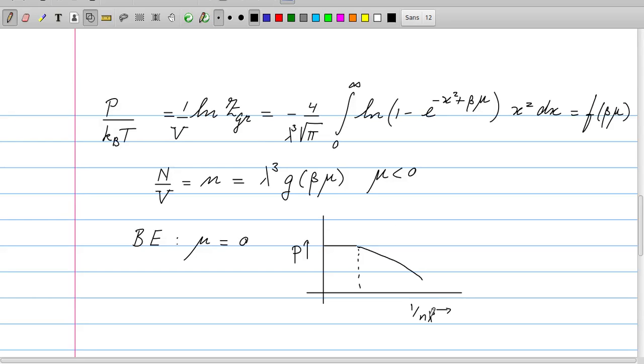That once the density has reached the critical density beyond which the ground state is getting macroscopically occupied, the pressure remains constant. The value, by the way, where this happens is the critical value which is 1/2.61 in units of the quantity 1/(n λ³).